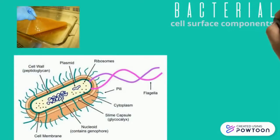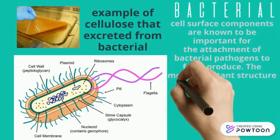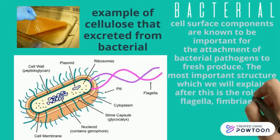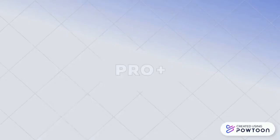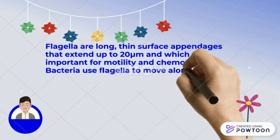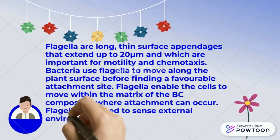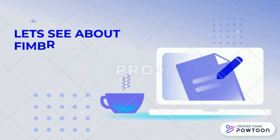Bacterial cell surface components are important for the attachment of bacterial pathogens to fresh produce. The most important structures are flagella, fimbriae (also known as pili), and cellulose. Flagella are long thin surface appendages that extend up to 20 micrometers and are important for motility and chemotaxis. Bacteria use flagella to move along the plant surface to find a favorable attachment site, and flagella also help sense the external environment to regulate biogenesis and virulence.